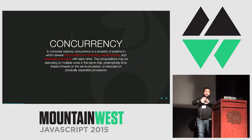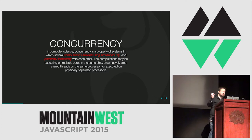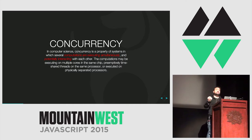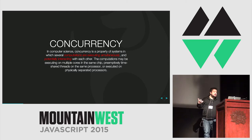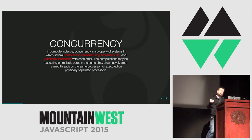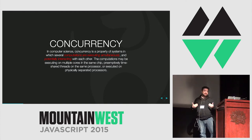Quick definition — this is actually just from Wikipedia. Concurrency is simply the act of having computations that are executing simultaneously, and those computations, or functions, or code that's running, have the potential to interact with each other.